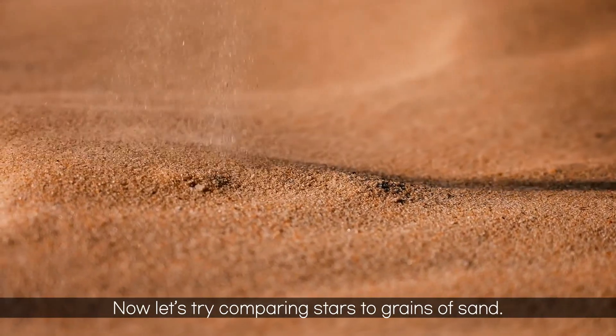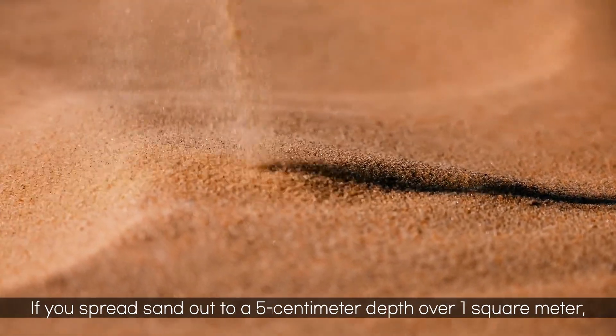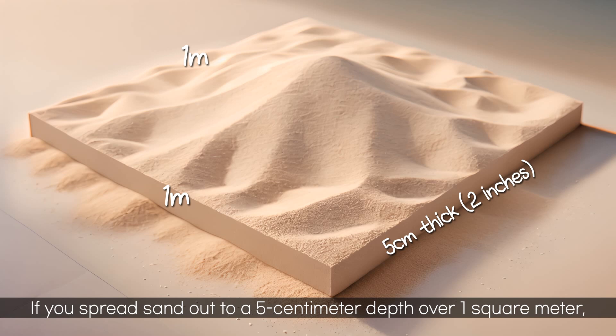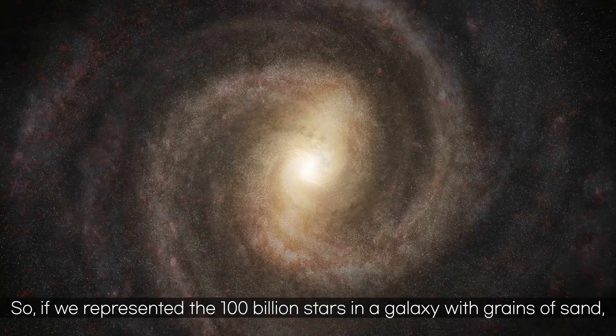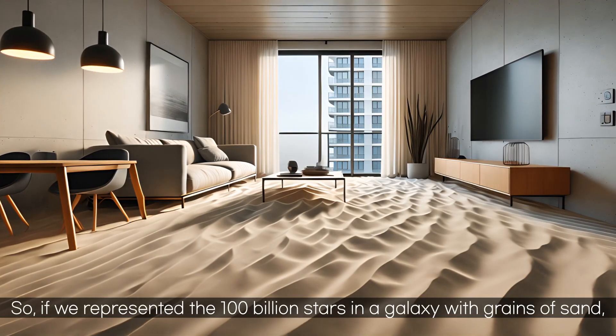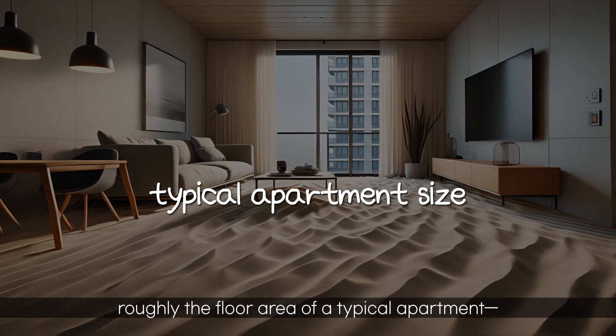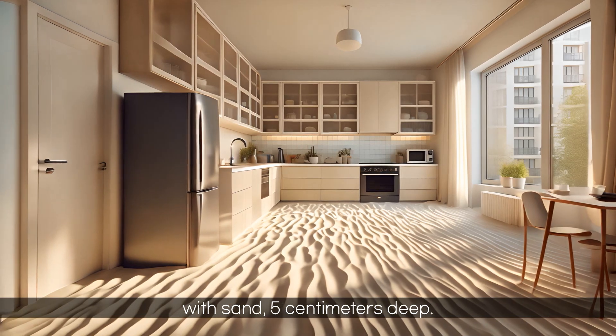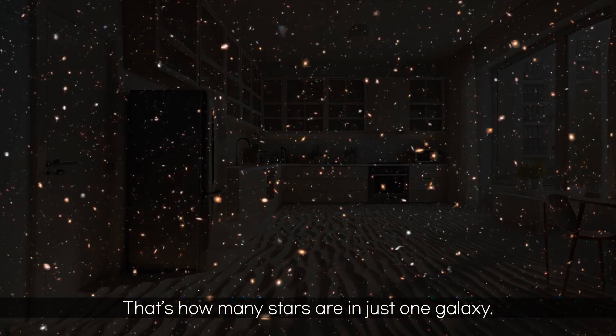Now let's try comparing stars to grains of sand. You've probably run your hands through sand at the beach, right? If you spread sand out to a 5 centimeter depth over 1 square meter, you'd have about 1 billion grains in that patch. So if we represented the 100 billion stars in a galaxy with grains of sand, you'd need to cover about 100 square meters, roughly the floor area of a typical apartment, with sand 5 centimeters deep. That's how many stars are in just one galaxy.